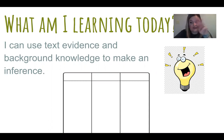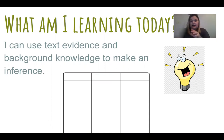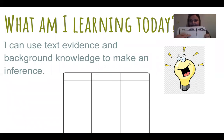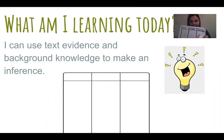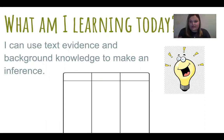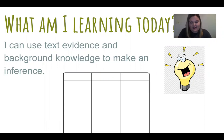That is why we have three different sections of our chart today. What we're going to practice today is using our text evidence, our background knowledge — or what we already know — and using both of those together to make an inference. Making inferences is something that good readers are always doing. We're always making guesses of what's going to come up next in the book.